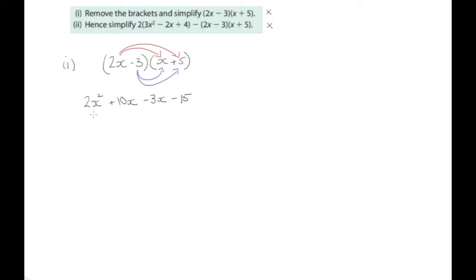Now can we simplify this? Yes we can. The 2x squared, there's no other x squared so we leave it as it is. And then we have plus 10x minus 3x. Well the variable is the same so we subtract the two coefficients. So 10 minus 3 is 7, so plus 7x, and then minus 15. There's no other constants so it stays minus 15.